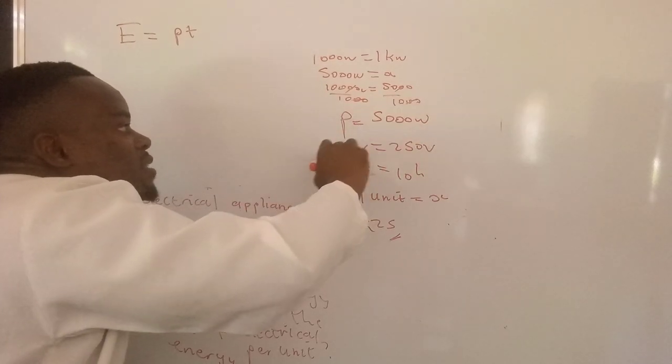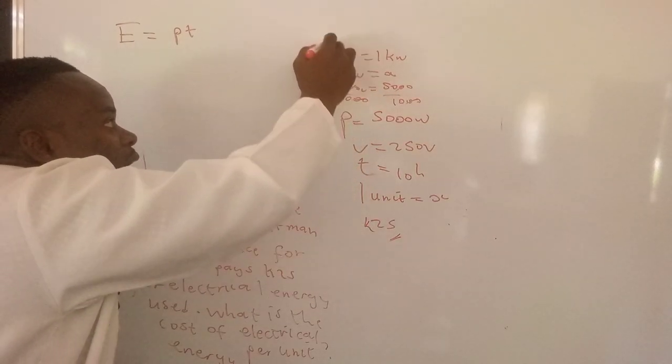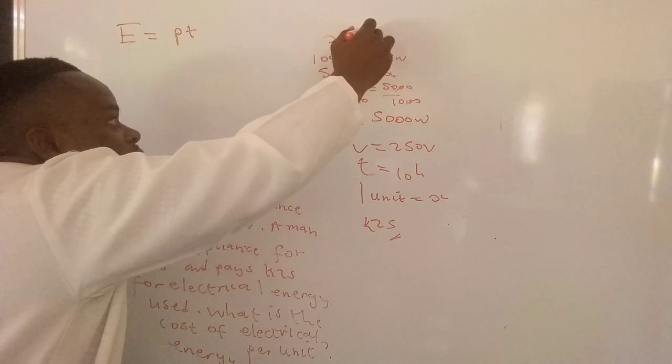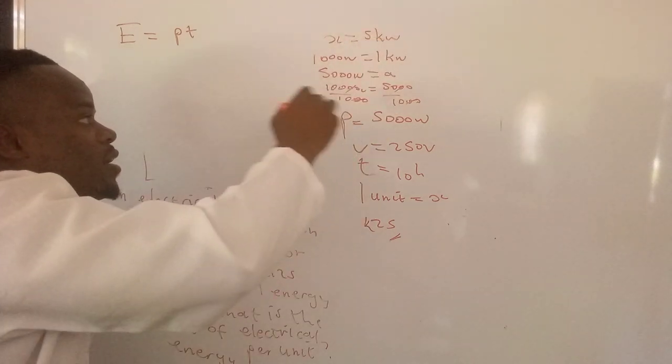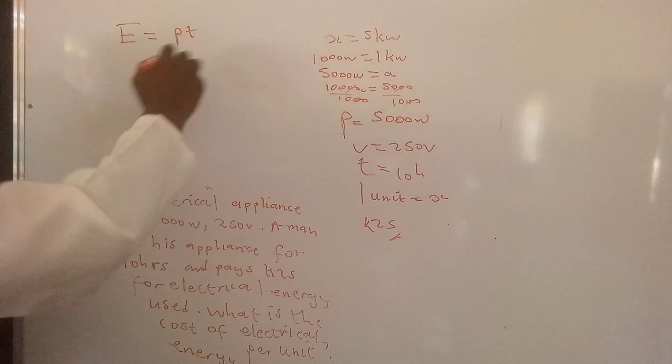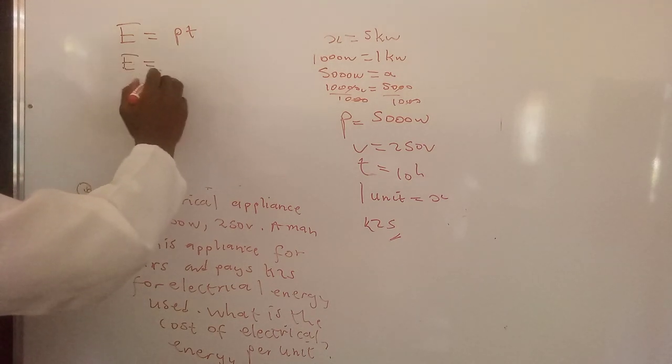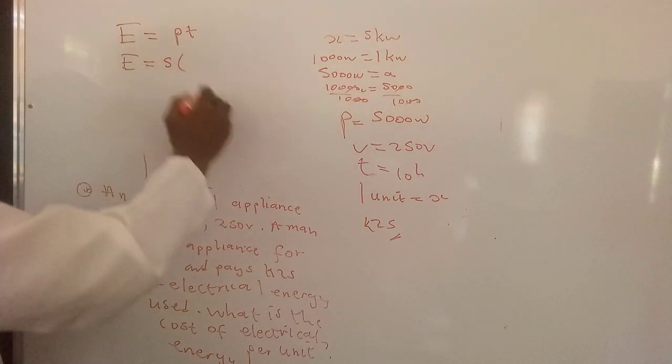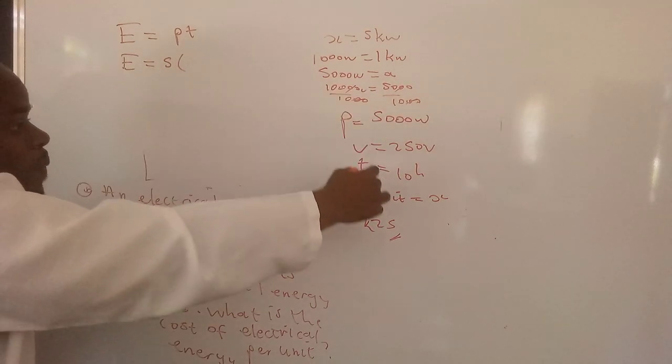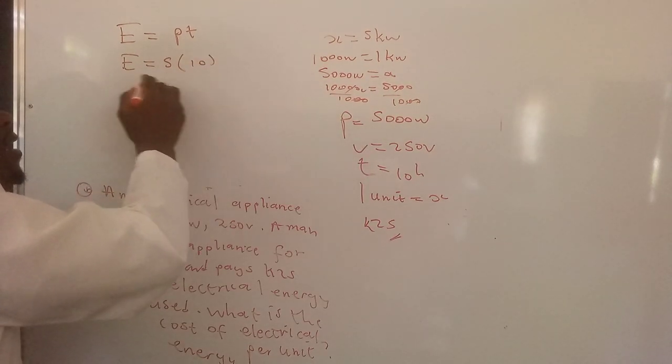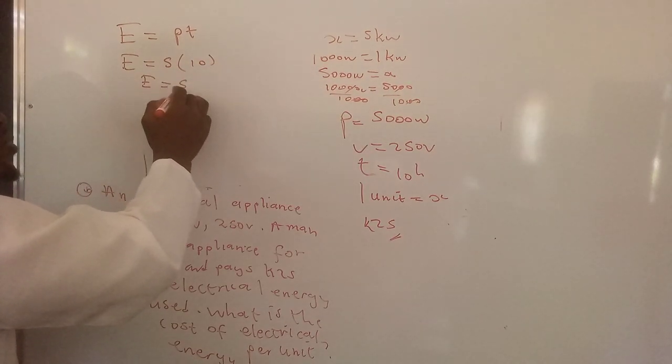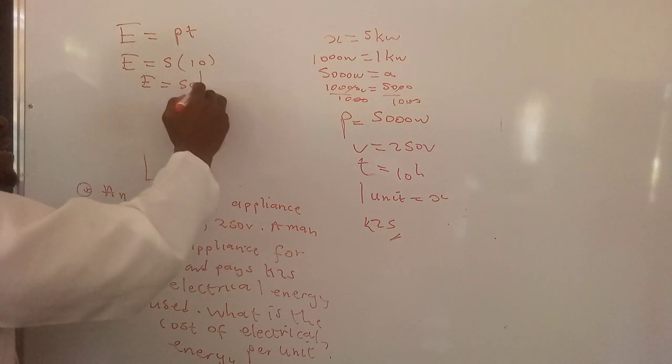We divide both sides by 1000. So what we have is actually x is equal to 5 kilowatts. So power is 5 kilowatts.